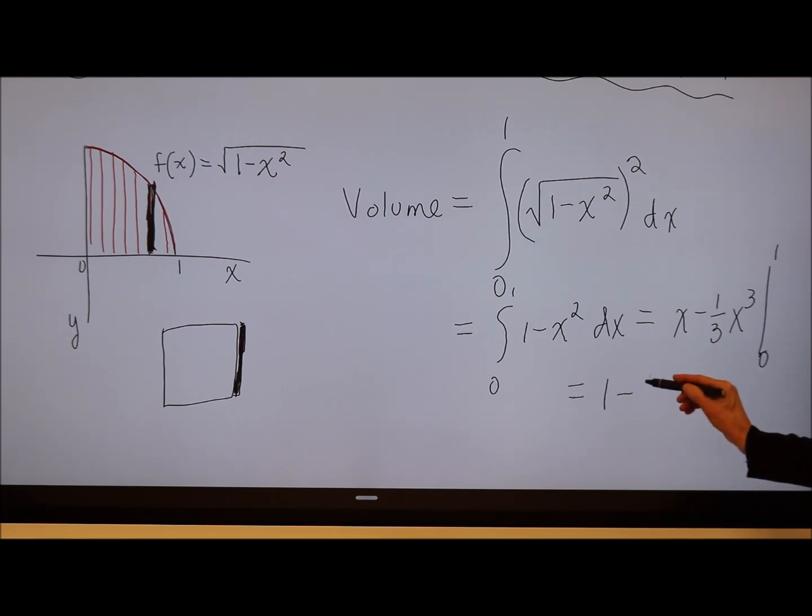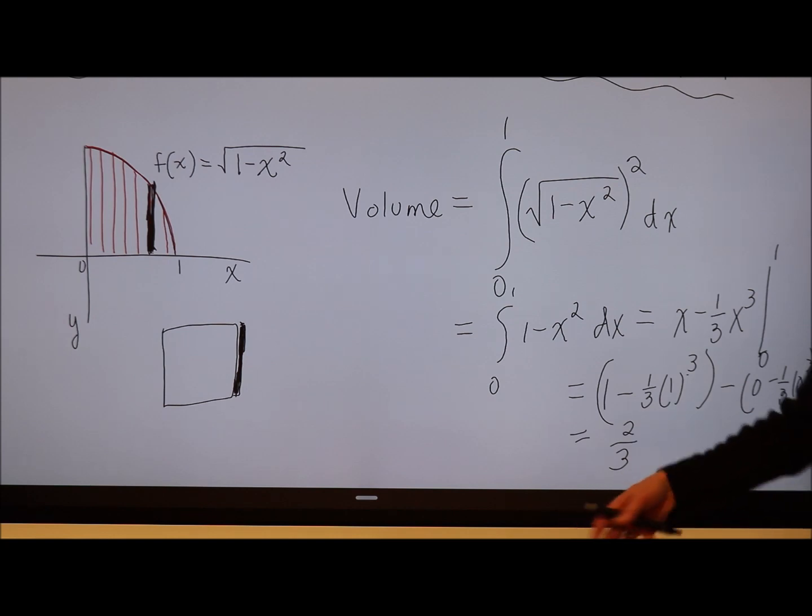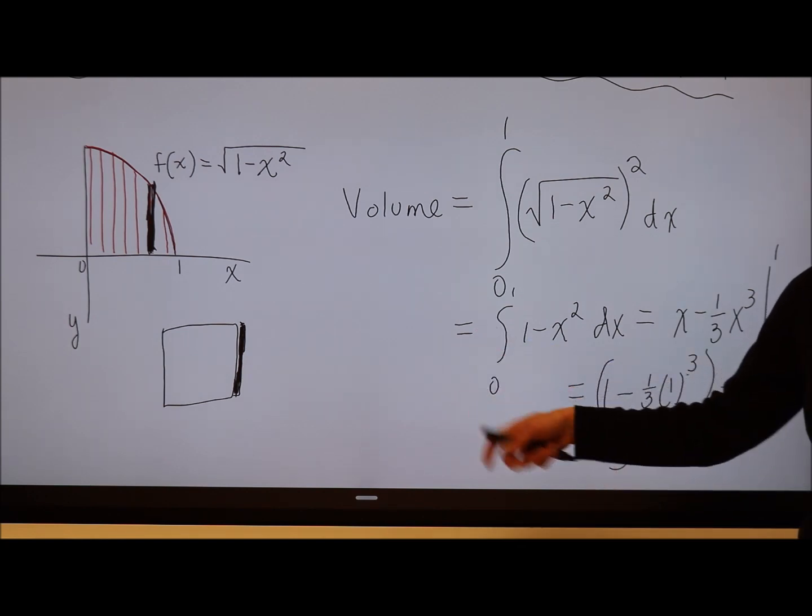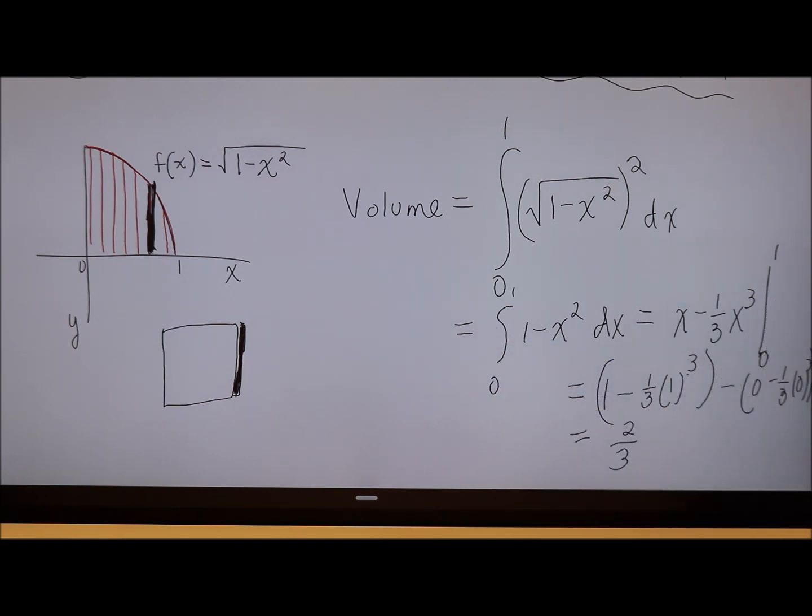That's going to give me 1 minus 1 third times 1 cubed minus 0 minus 1 third times 0 cubed. I love these numbers. That is a cube, not a 5, although I guess it doesn't matter in this case. So that's going to be 1 minus 1 third or 2 thirds. So the volume of this solid would be 2 thirds cubic units, whatever we're doing. How cool is that?